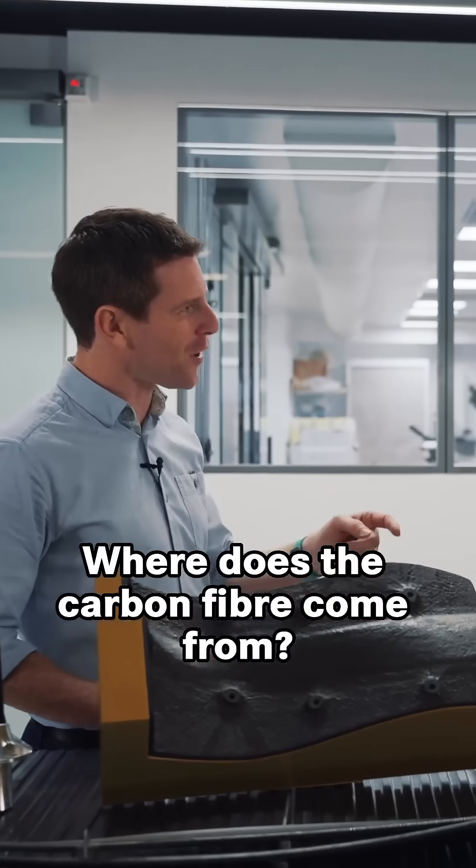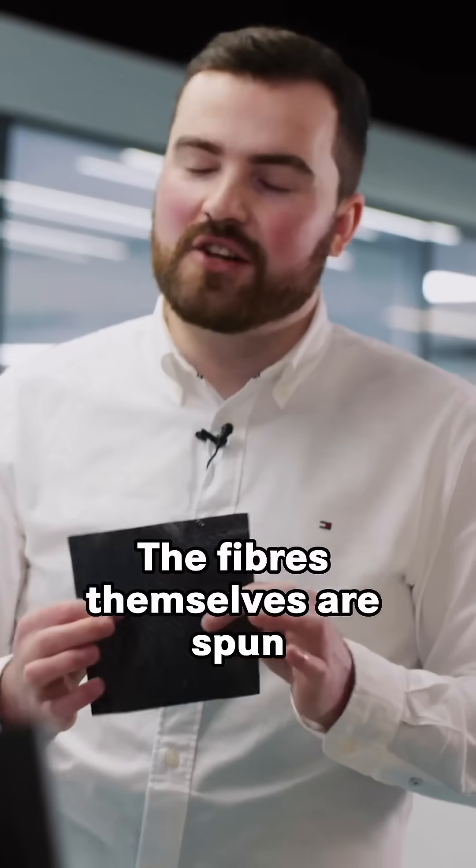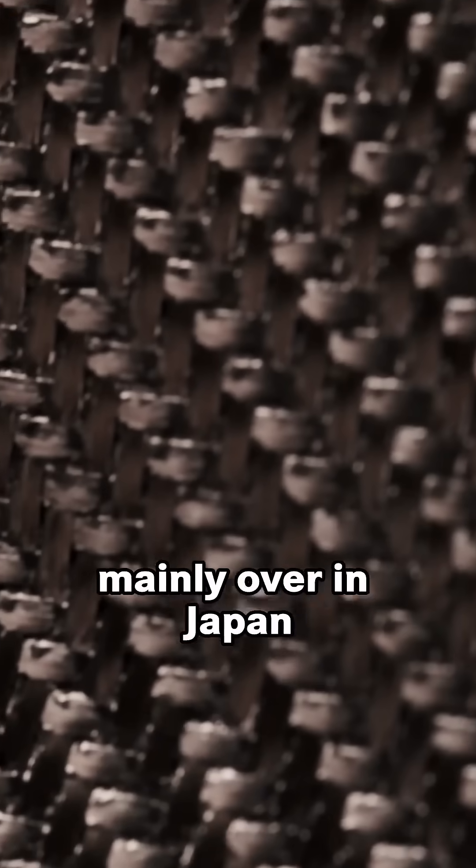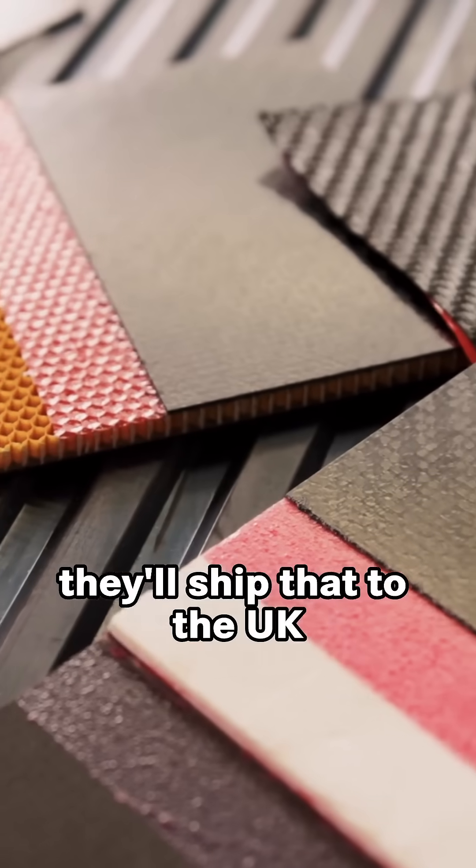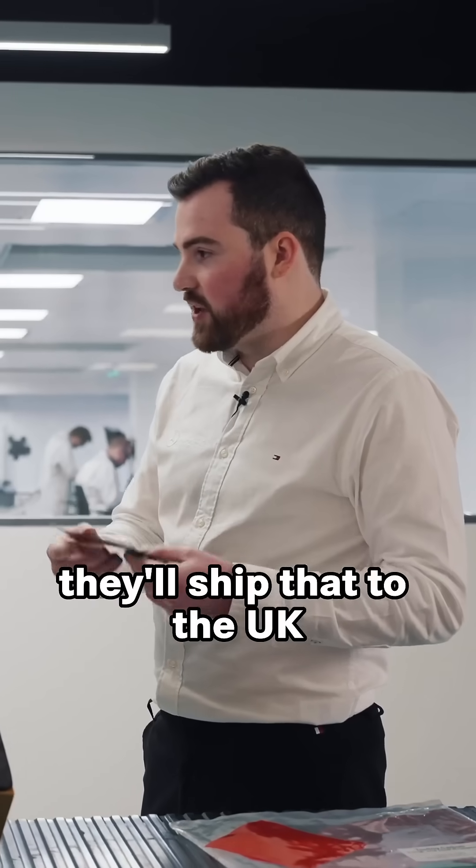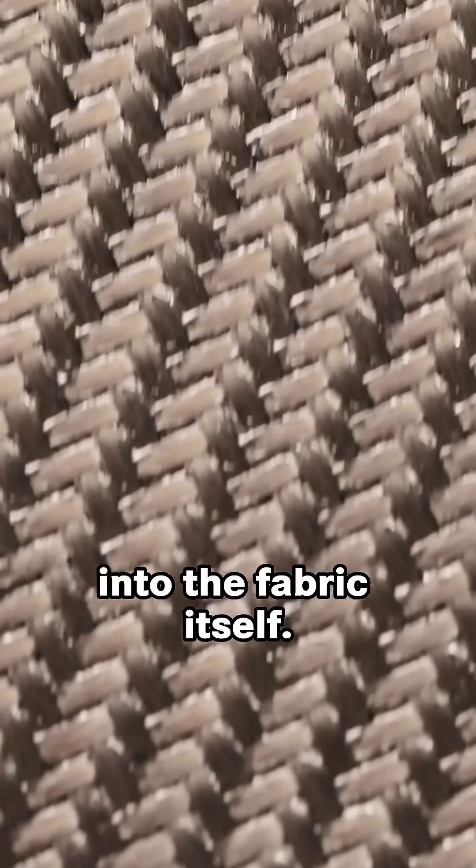Where does the carbon fiber come from? What is carbon fiber? The fibers themselves are spun mainly over in Japan. They'll spin them and then they'll weave them into the actual fabric. They'll ship that to the UK where resin will be pre-impregnated into the fabric itself.